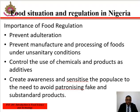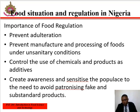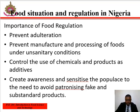Food situation and regulation in Nigeria. Nigeria is a large producer of raw food, which is seasonal. During the period of harvest, a first impression of surplus is given. However, within a short time, they are exhausted through direct consumption, wastage, and deterioration.